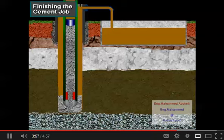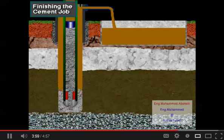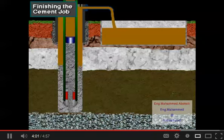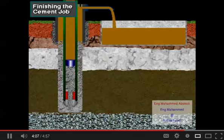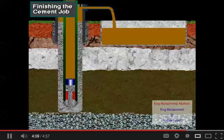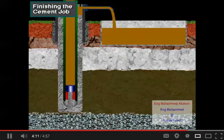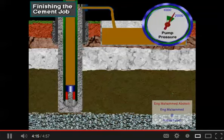When the calculated amount of cement slurry has been pumped, a crew member releases the top wiper plug. Displacement fluid forces the top wiper plug down the casing until it seats in the float collar on top of the bottom plug. Because the top plug is solid, pump pressure rises when the plug seats.